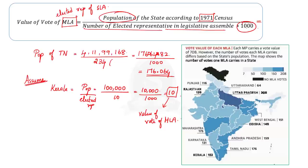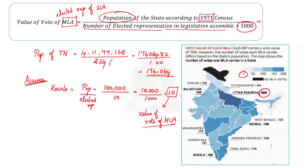Note that the value of vote of an MLA from UP is the highest at 208, and the value of vote of an MLA from Sikkim is the lowest at 7. This difference exists because there is variation in population across different states. If the population is higher, then the value will be higher; if the population is lower, then the value will also be lower.